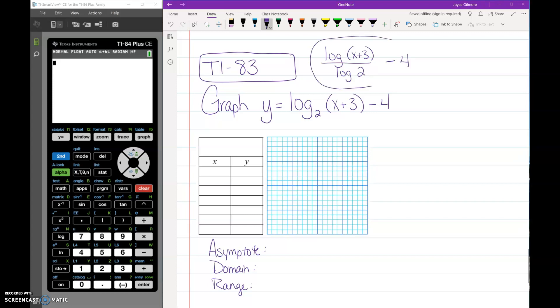So in a TI-83, you have to figure out how to enter that into your calculator. You still go to y equals. Still check to make sure your plots are turned off. We want to do log button x plus 3, close your parentheses.